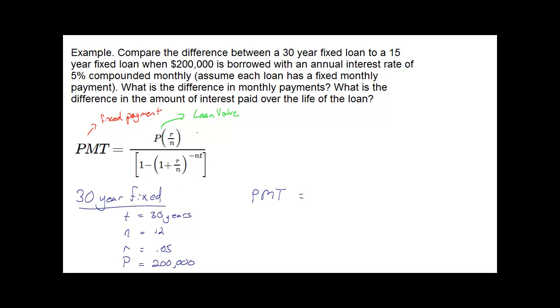The principal is the $200,000 loan we're taking out. My payment will be the output from this formula: 200,000 times R over N, so that's 0.05 over 12.